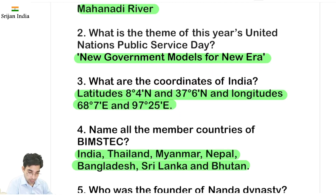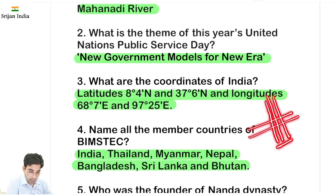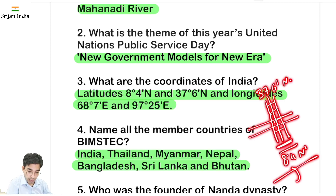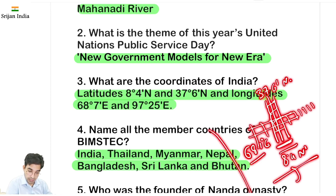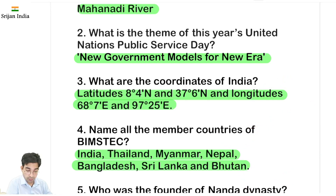India ke coordinates kya hai? Ek hote hain latitude aur doosre hote hain longitude. India ka latitude hai 8 degree 4 minute north se lekar 37 degree 6 minute north tak — equator ke upar hain hum. Longitude ki baat karein: 68 degree 7 minute east se lekar Arunachal ke 97 degree 25 minute east tak, kyunki hum eastern hemisphere mein hain, GMT ke right side mein. So these are the coordinates of our country.